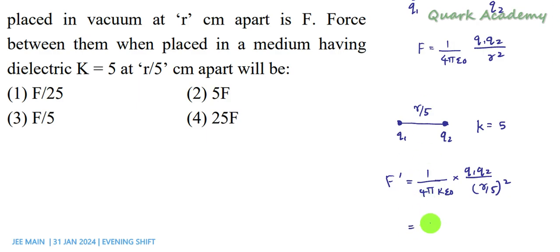So this is 1 by 4π epsilon 0, 5 into q1q2 by r squared by 25. This is 25. So this is 5.